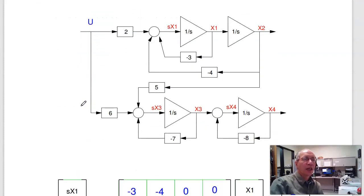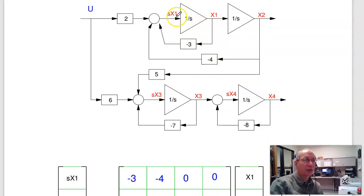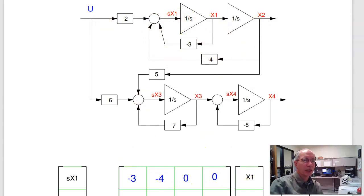Problem 3: Given the block diagram, express this in state-space form. To do that, I would take the first guy, sx1—that's the first row. That's -3x1 - 4x2 + 2u. That gives you the first row.